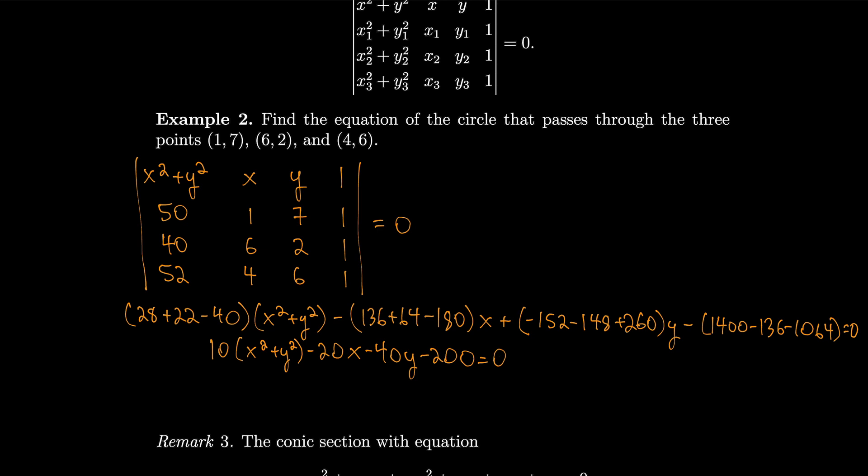Which is the same thing as x minus 1 squared plus y minus 2 squared equals 5 squared. If you just group your terms together, complete the square. So that's just a circle that has center 1, 2, and radius equal to 5. So you can see how this is a little bit annoying to do by hand, but for a computer or something, it could be pretty efficient. Just compute this thing, and then there you go.